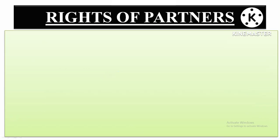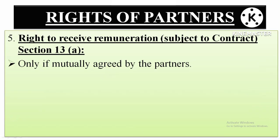Number five is the right to receive remuneration. Generally, in a partnership firm, all partners put in their capital and share the profit — so there may not be a separate right to receive remuneration. However, another situation arises in some firms: for instance, if there are 10 partners, only 5 may be actively managing the day-to-day activities and business affairs, while the other 5 partners are simply contributing capital and not actively participating in the management.